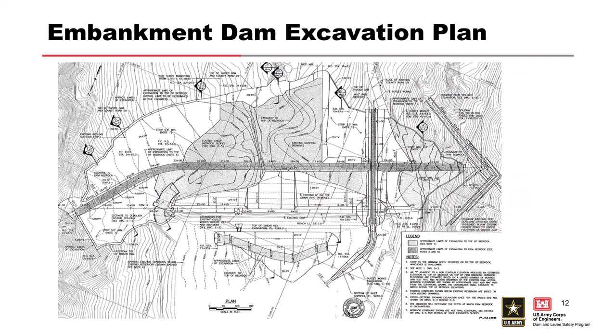A detailed excavation plan from the final design set shows the new embankment alignment, the old embankment, and the shaded excavation area to remove soft clay down to bedrock. Top-of-bedrock contours were estimated from borings in the area. The plan also shows the excavation for the new outlet, the spillway in the granite, and the excavation for the upstream shear key.